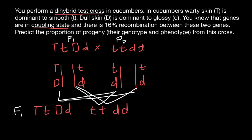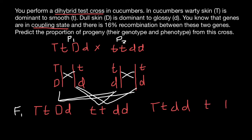But what if recombination did happen? For example, in parent one, crossing over produces a recombinant chromosome with dominant T and small d. Parent two can only give small t and small d, since crossing over doesn't change its genotype. When crossing over happens in parent one, it produces two new chromosome variants: capital T with small d, and small t with capital D. Combined with parent two's small t, small d, these give two recombinant genotypes in the progeny.